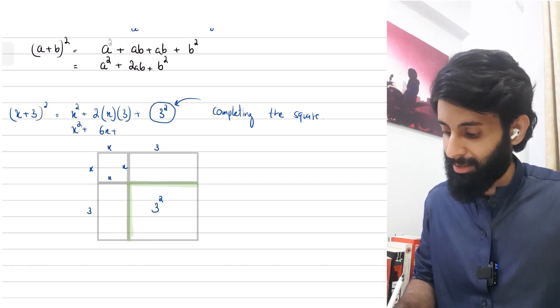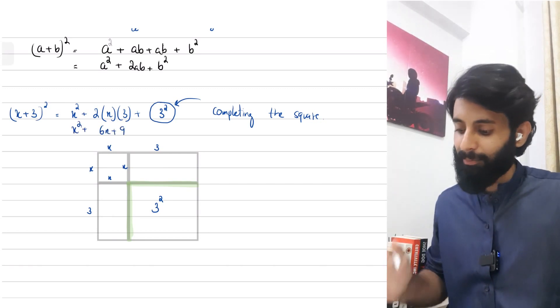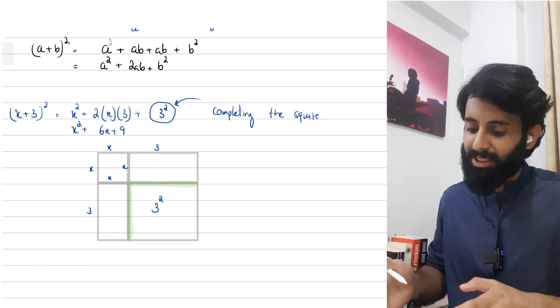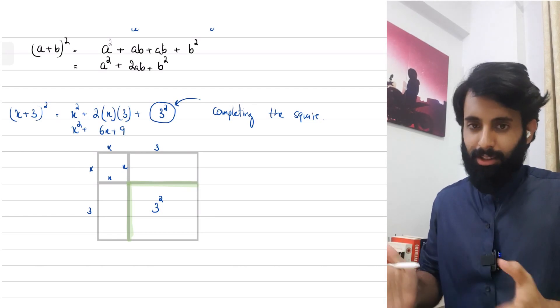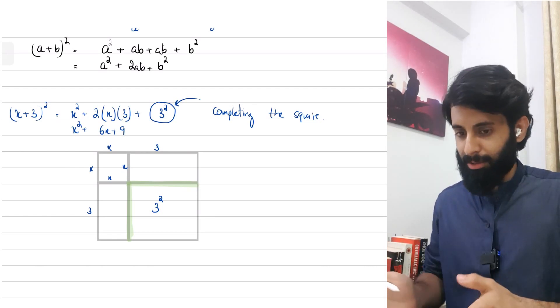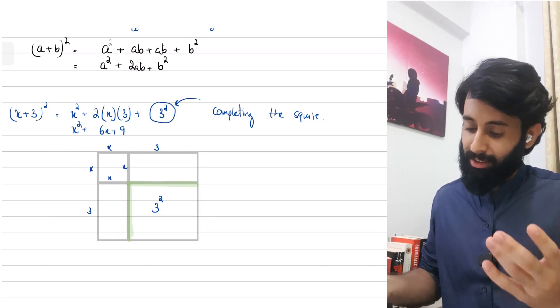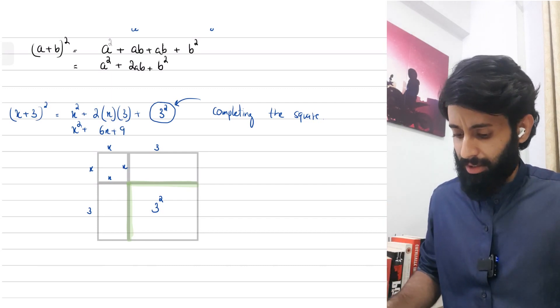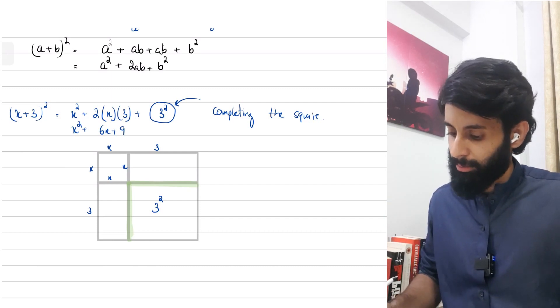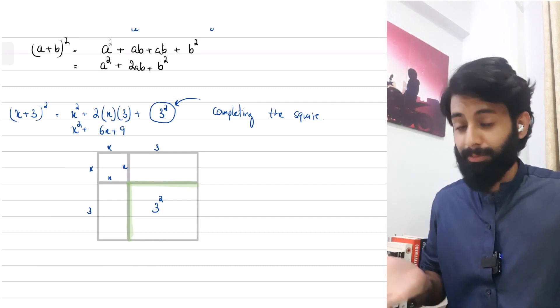This is why (x + 3)² ultimately becomes x² + 6x + 9. This is something I saw on the internet, found it really cool, and thought I'd teach it to you in my own words.